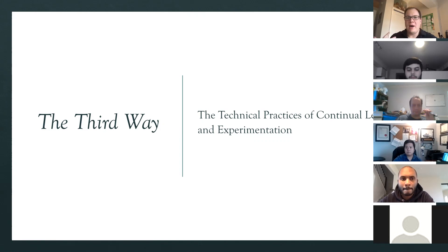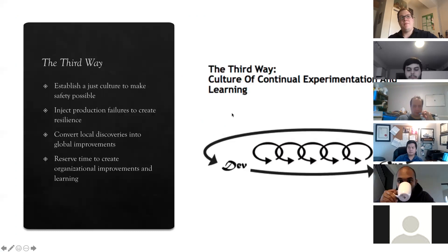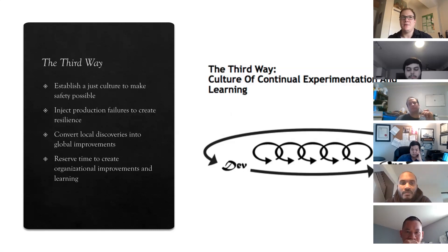The third way is all about creating something called the improvement kata. From the Toyota method, they have these different katas for practice. This one is based off the improvement kata, which means throughout our daily work we should have some sort of process for baked-in and prioritized continual learning. The high-level principles include: establishing a just culture to make safety possible, injecting production failures into our process to create resilience, converting local discoveries into global improvements, and reserving time to create organizational improvements and learning.